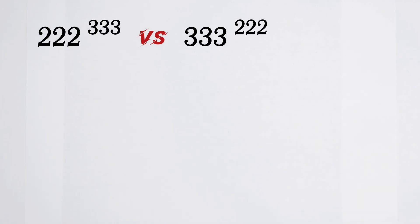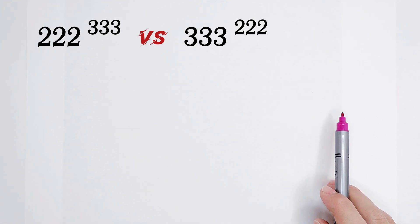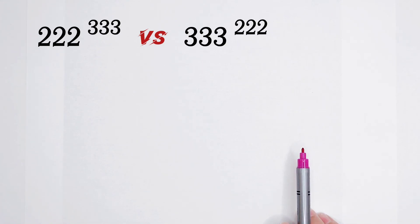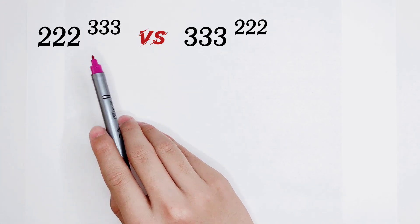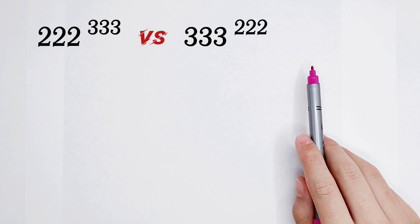Let's start. Have you noticed that the bases both have a common ground? They are all integral multiples of 111. And the exponents — this is 333, and this is 222.